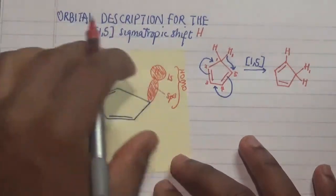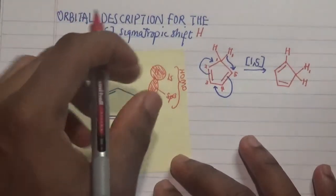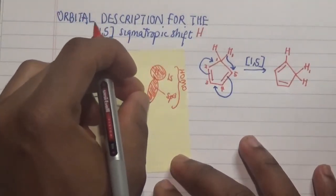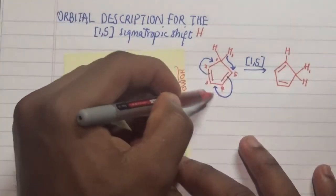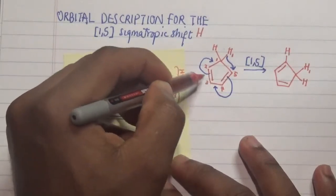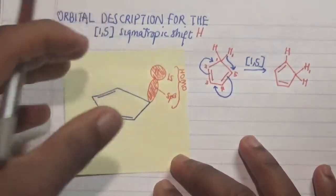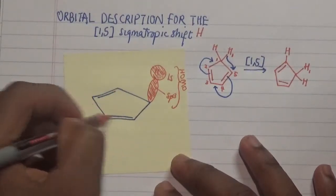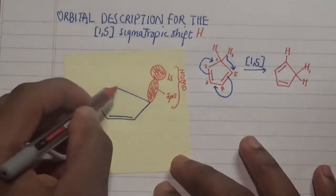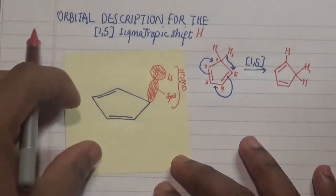Now everything else that is unsaturated, like this source over here that is involved in the electrocyclic process, is by default our LUMO. In this case, we have four carbons that are unsaturated and they are the LUMO.